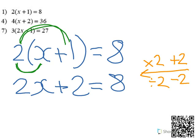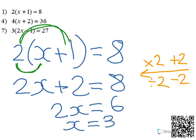Take away 2 from both sides, and you'll be left with 2x = 6. Divide both sides by 2, and you get x = 3.